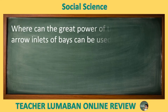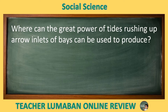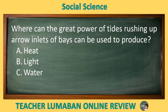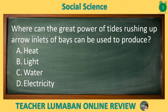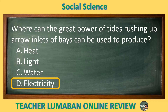Where can the great power of tides rushing up narrow inlets of bays be used to produce? Letter A: Heat. Letter B: Light. Letter C: Water. Letter D: Electricity. The correct answer is Letter D, Electricity. The great power of tides rushing up narrow inlets of bays can be used to produce electricity.